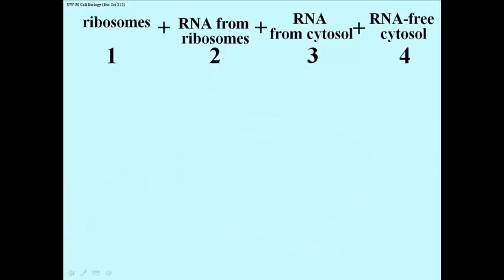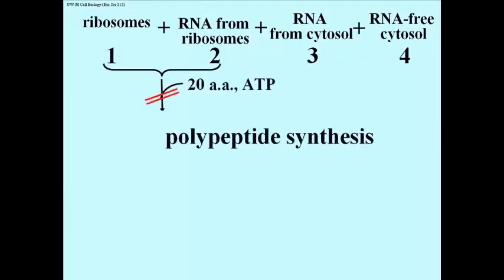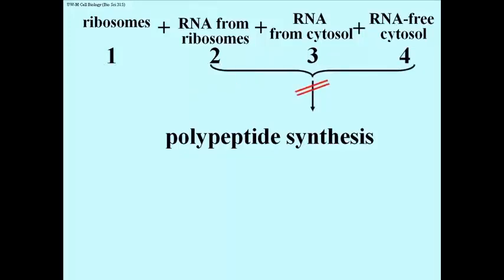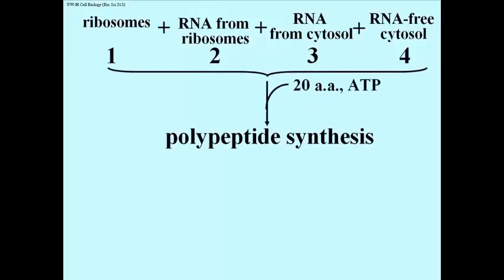He then did a reconstitution experiment, something we've seen before. He found that if he took the ribosomes and the RNA that had been extracted from ribosomes, added them back together and threw in 20 amino acids and ATP, the same sort of experiment he did in the first instance, he did not get any polypeptide synthesis. In fact, he tried various combinations, as you see here, and got no polypeptide synthesis until in fact he added back all 4 components.